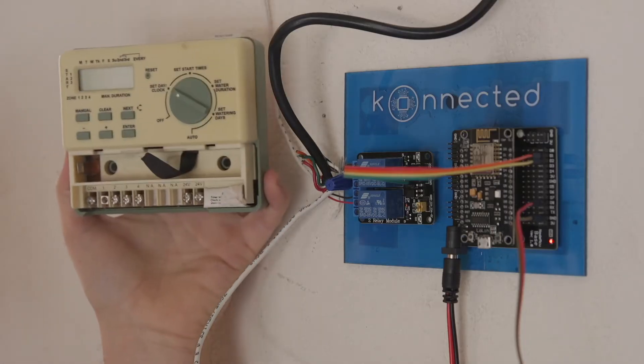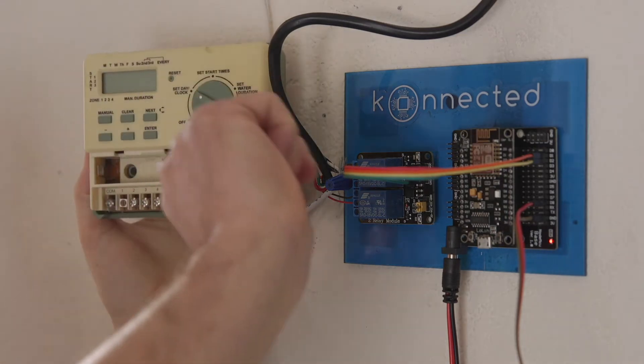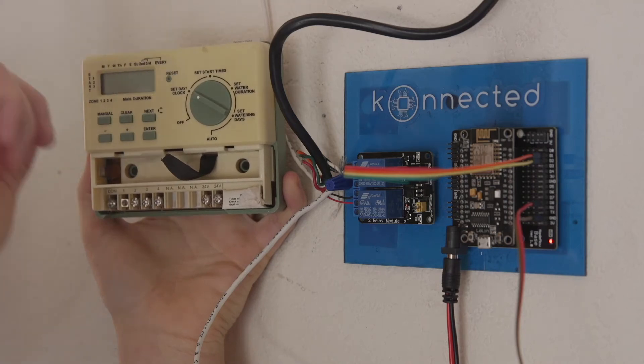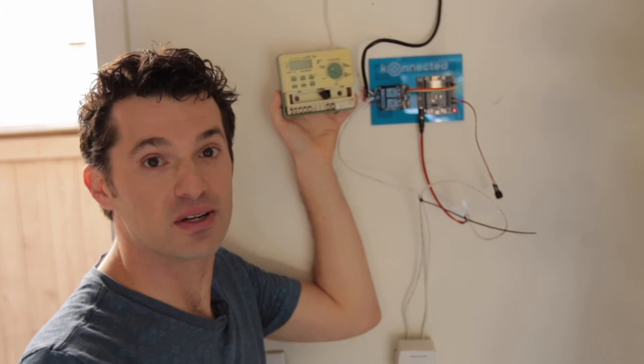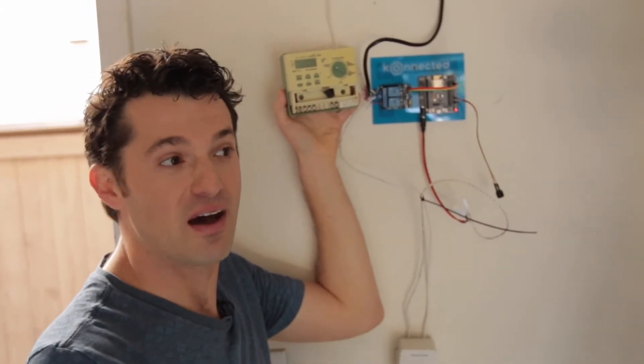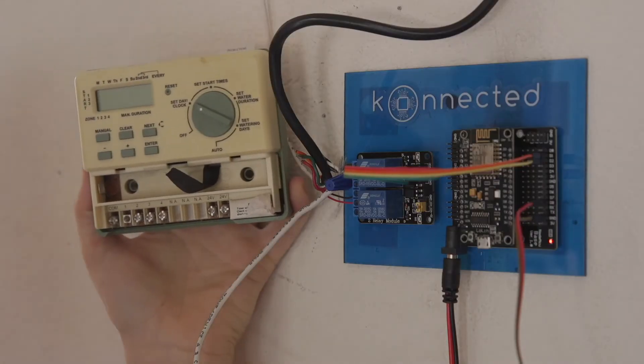This is the old sprinkler controller that was here with my house and this black wire here is going outside to the backyard where the sprinklers are. Now I have a fairly small backyard so I only have one sprinkler valve zone. Many homes that may have four, five, even six zones or maybe even more than that.